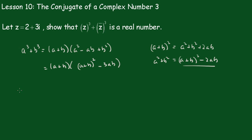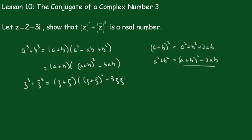Now we can replace the a's and b's with the z's and z-conjugates. So we get that z cubed plus z-conjugate cubed is equal to z plus z-conjugate, times z plus z-conjugate all squared minus 3 times z times z-conjugate.